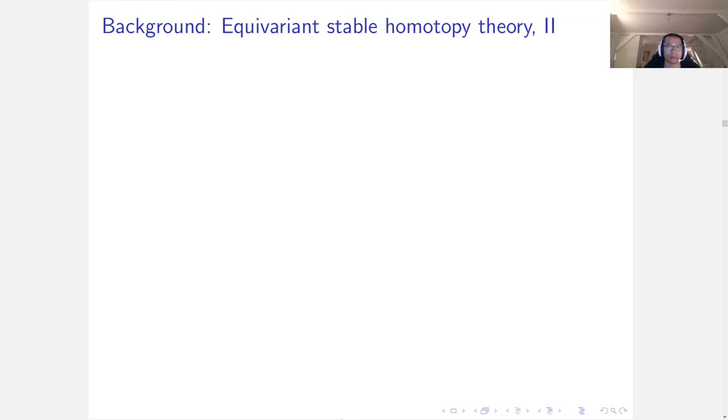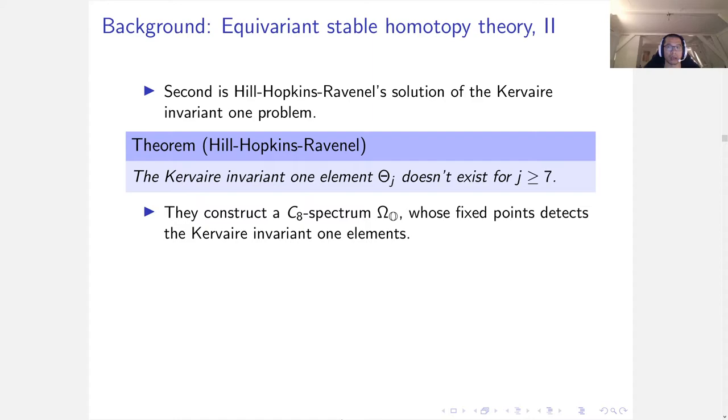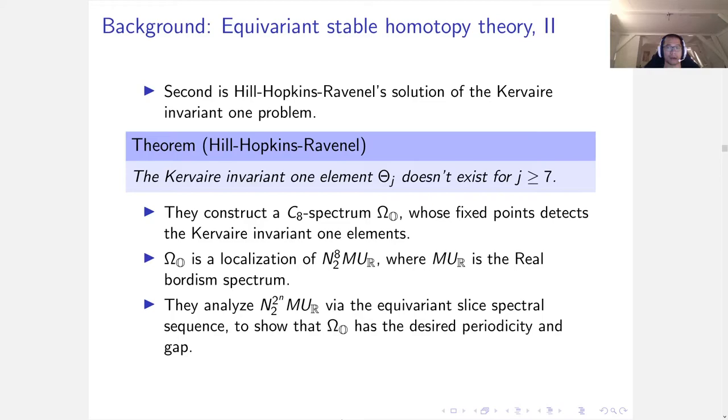A second inspiration is Hill-Hopkins-Ravenel's solution of the Kervaire invariant 1 problem. They show that the Kervaire invariant 1 elements don't exist for j greater than or equal to 7. They construct a C_2^j spectrum Omega O whose fixed point detects the Kervaire invariant 1 elements. Omega O is a localization of norm from C_2 to C_2^j of MU_R, where MU_R is the real bordism spectrum. They analyze norms of MU_R by the equivariant slice spectral sequence to show that Omega O has the desired properties.